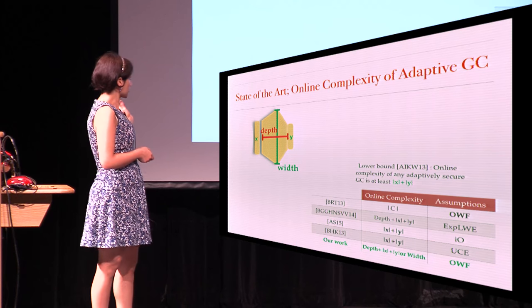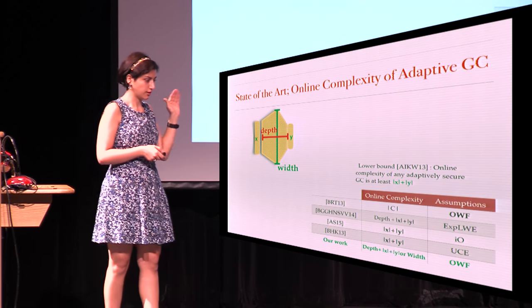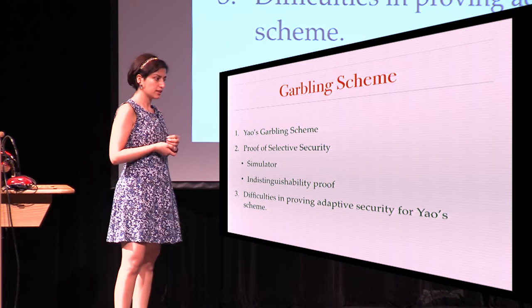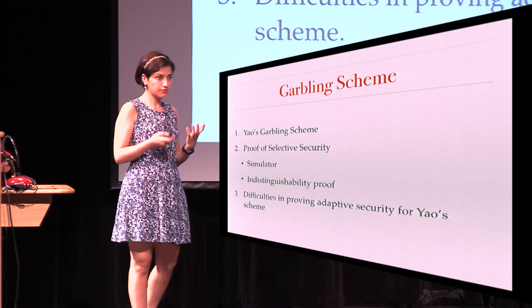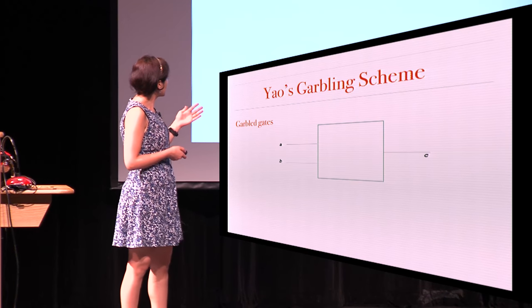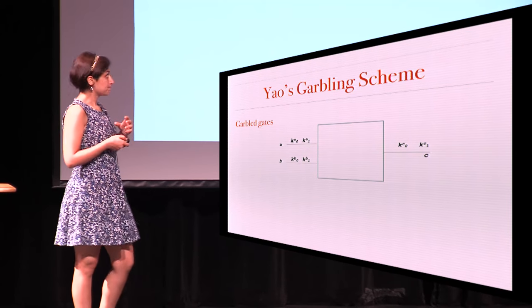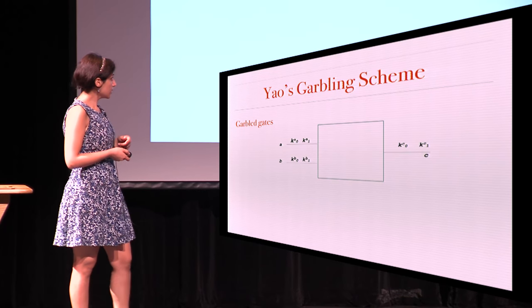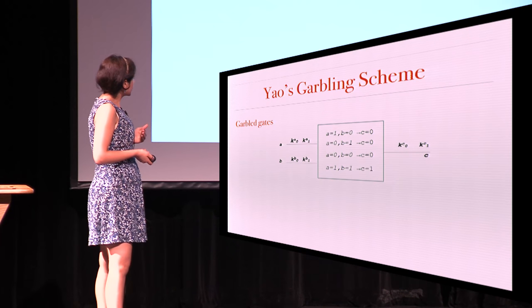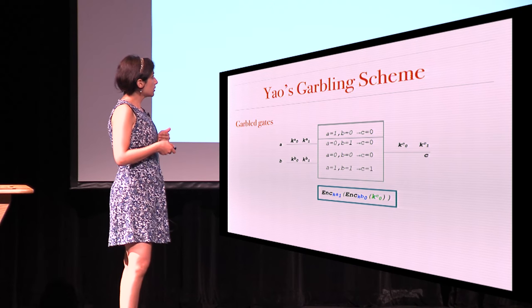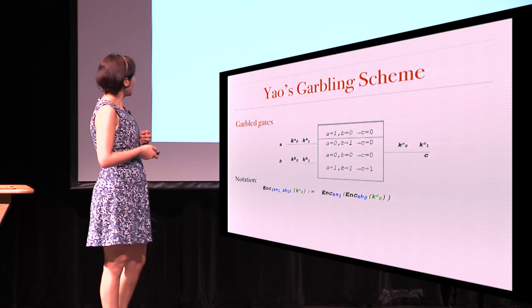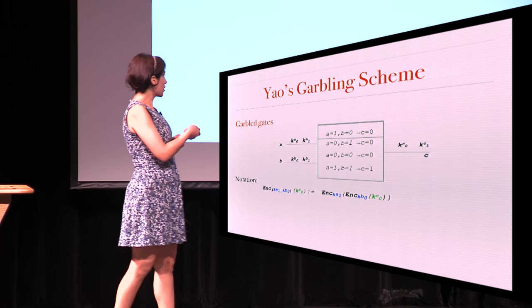For the rest of the talk, our circuits are going to be toppled over on the side, so the input is on the left, the output on the right, and the depth is the horizontal line. We'll see Yao's garbling scheme and the proof of security, and then we'll have enough intuition to see why it's difficult to have adaptively secure garbling schemes. Starting with just one gate: we have two input wires and one output wire. We give each of them two random keys associated with wire values 0 and 1. To garble it, we look at the truth table of the gate, and for each line we create one ciphertext, which is an encryption of the output wire key using the input wire keys.